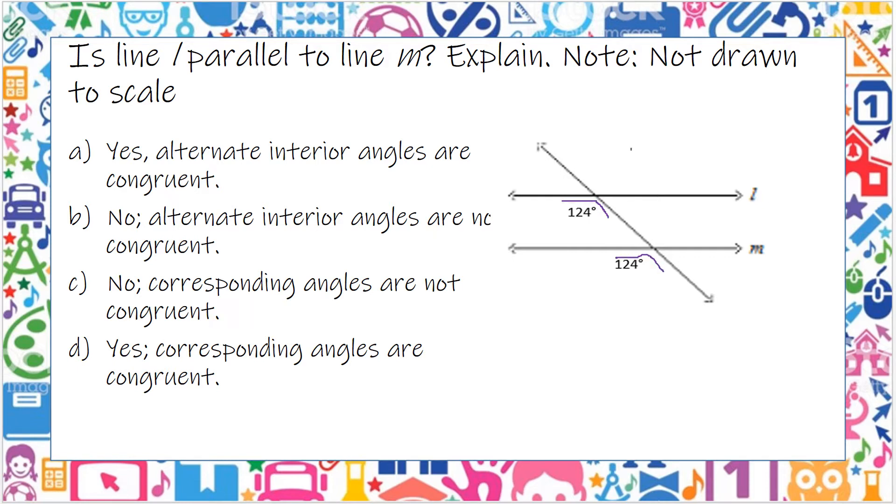Notice here that 124 is on the interior, and this 124 is exterior. So it can't be alternate interior or alternate exterior. But it could still be corresponding.